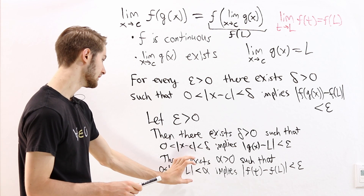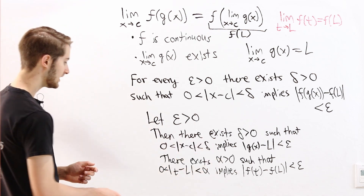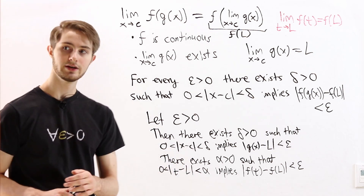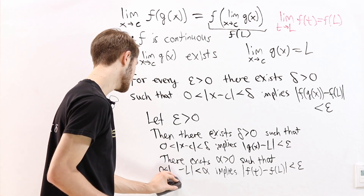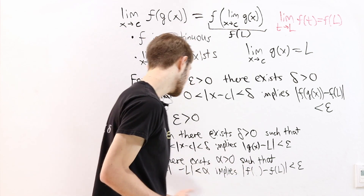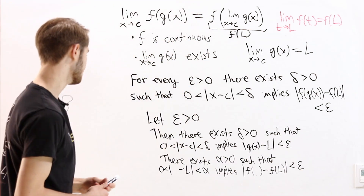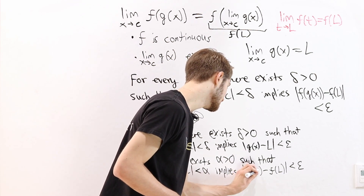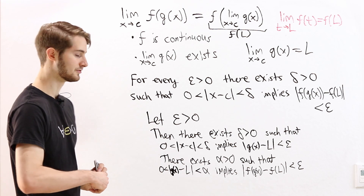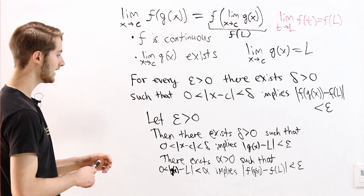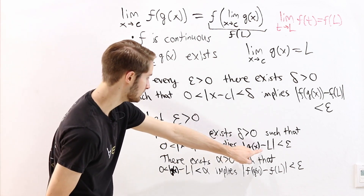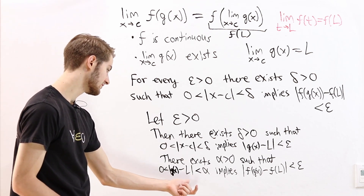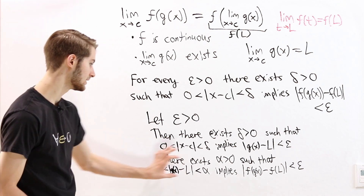This statement about alpha applies any time we have some number t that's a distance from L less than alpha. In particular, instead of looking at t, I'm going to substitute in g of x. We can do that because this implication has to work for any number. So if g of x is a distance less than alpha from L, then f of g of x has to be a distance less than epsilon from f of L. We have a statement that says g of x minus L is less than epsilon, but what we really want is the distance g of x minus L to be less than alpha, so that we can apply this second condition.